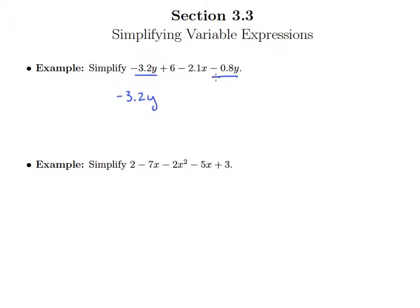But what we can do is use the fact that subtracting is the same as adding the opposite. So if this was plus negative 0.8y, then I could move the plus negative 0.8y over next to the negative 3.2y, but we know that plus negative 0.8y is the same as minus 0.8y. So all of that is to say we can move things around and use the commutative property, but just make sure that whatever symbol is in front of the term you're moving, make sure it stays with it.